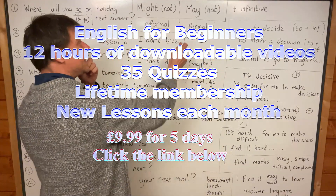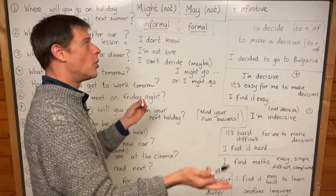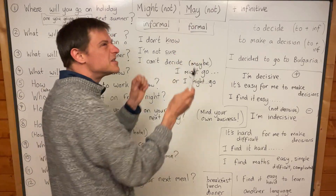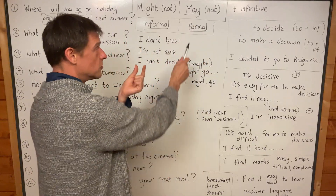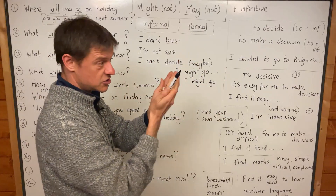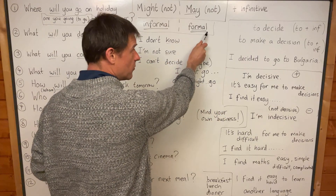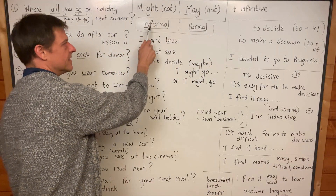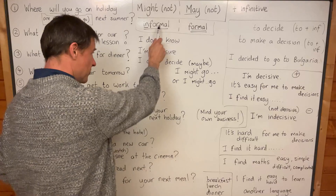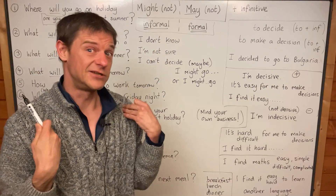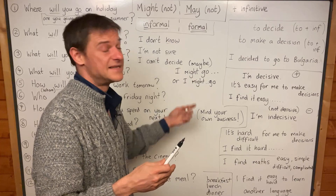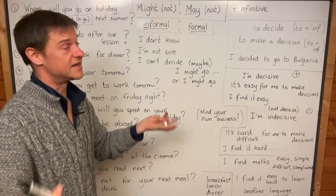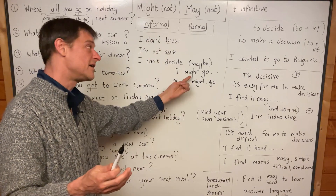You can also say I may go to Spain or I may go to France. May is a tiny bit more formal. Look this word up in the dictionary if you're not sure about formal. May is more formal, might is more informal. I usually say might because I speak informally 99% of the time.